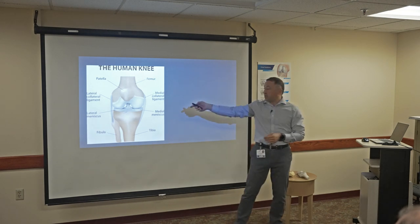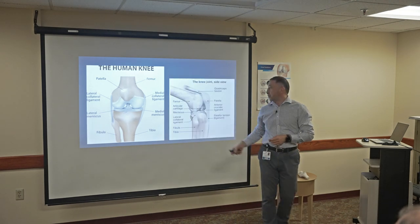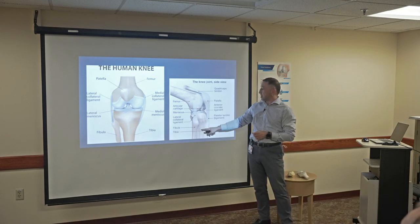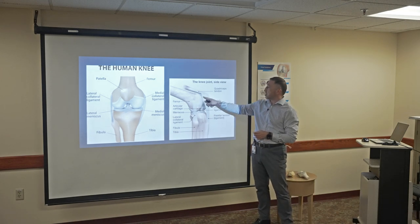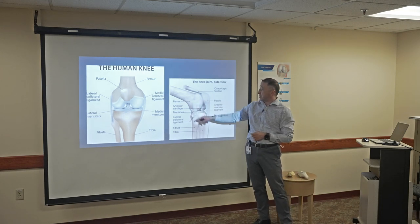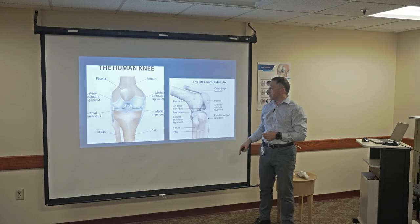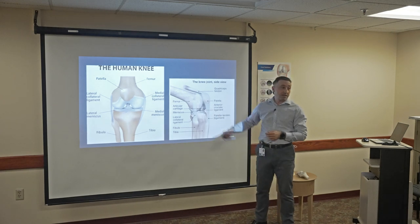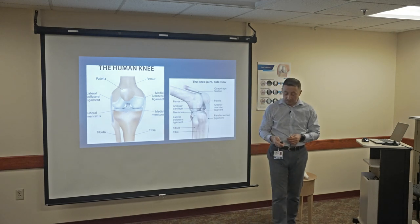This is the front view and this is the side view of the knee. Again, you can see the same bony structures — kneecap, meniscus here between the two bones — and the ligaments stabilizing the knee.